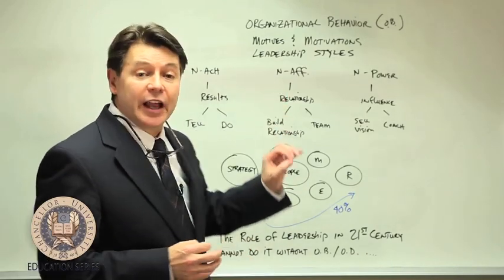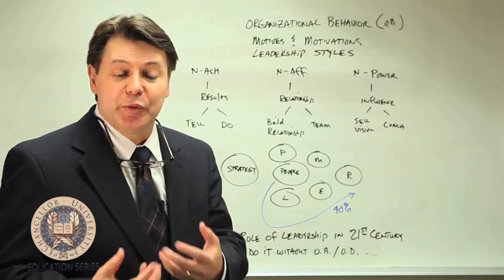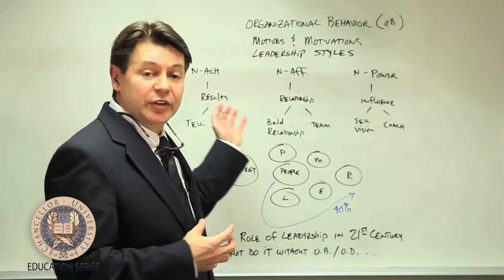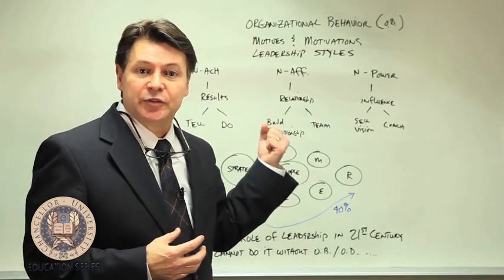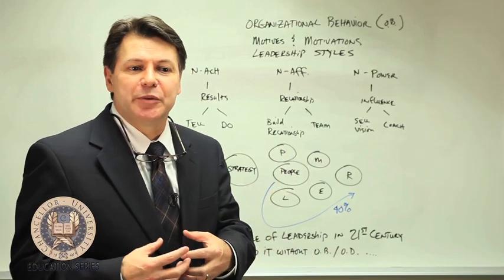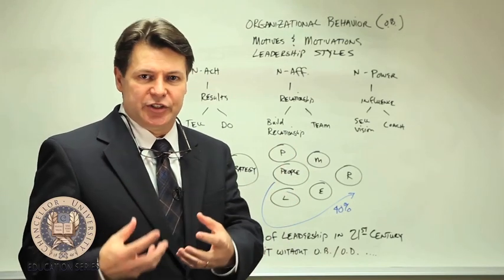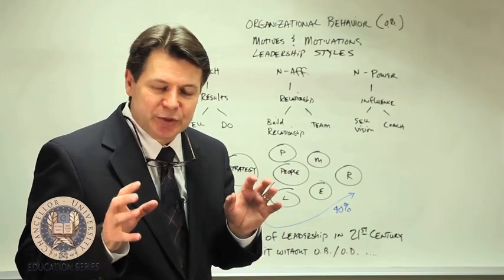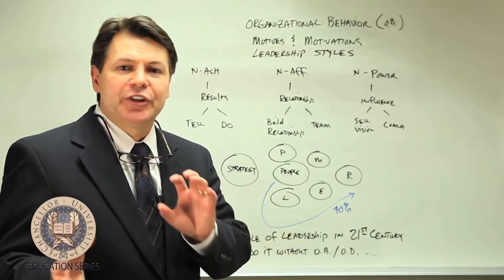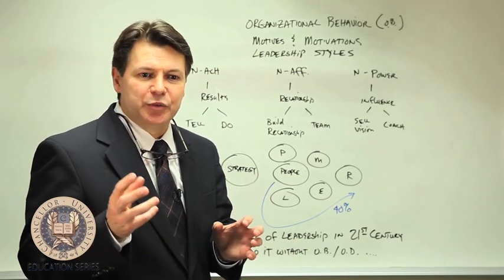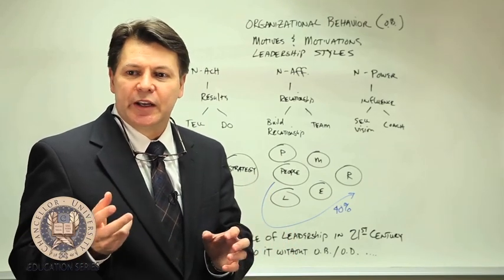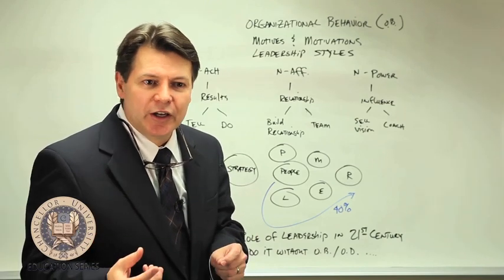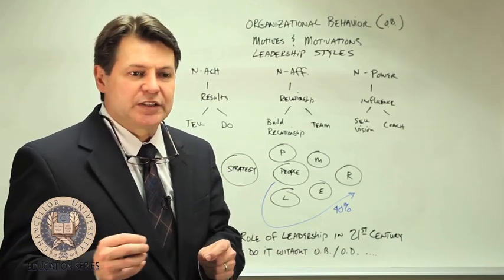A second category is high need for affiliation, and affiliation people are equal in number to achievement people. Affiliation people love relationships — and this is relationship for just relationship's sake, with no ulterior motive. They really enjoy connecting with people, getting to know people, and having lifelong friendships.